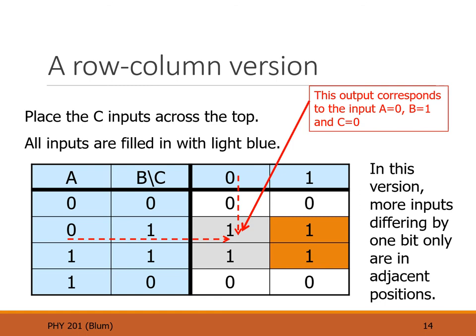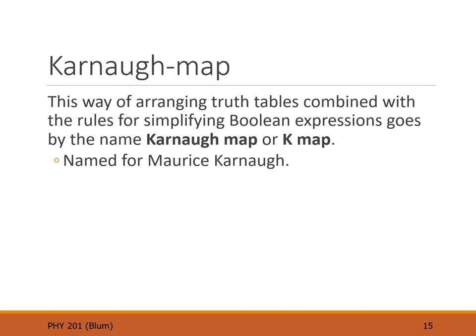From the previous example, those amber-colored ones were different by one and only one bit but were not consecutive. In this newly formed row-column version of the truth table, those amber-colored ones are now next to each other. We've introduced new ways to be next to each other, and therefore new ways to find simplifications.